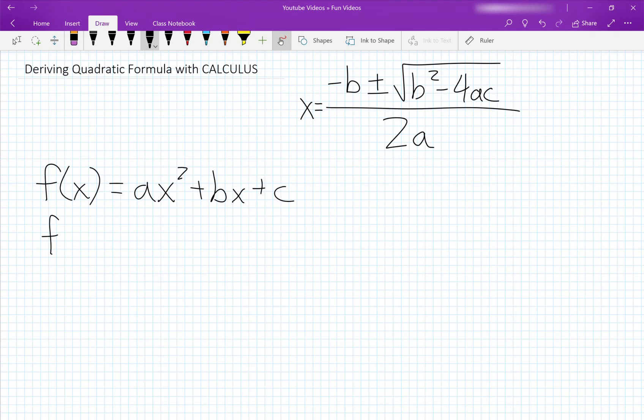We can take the derivative of this to find f prime of x with the power rule. We take the two down, that's 2ax, and then plus b, and since c is a constant, we just ignore that.